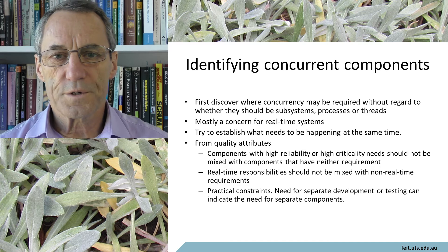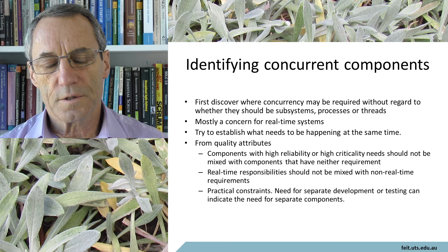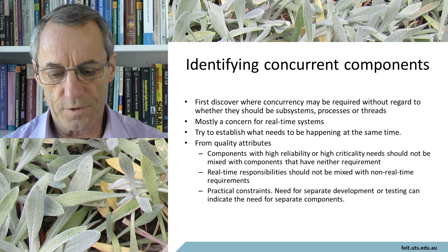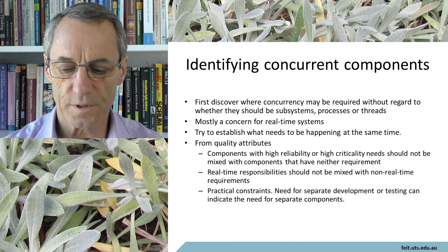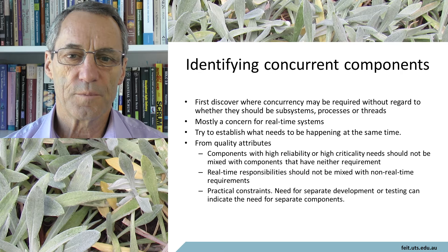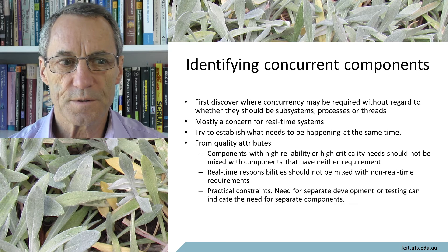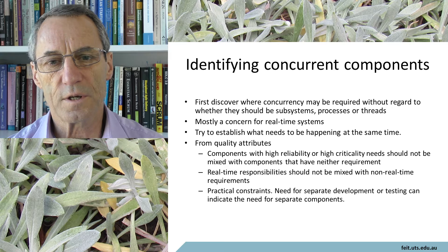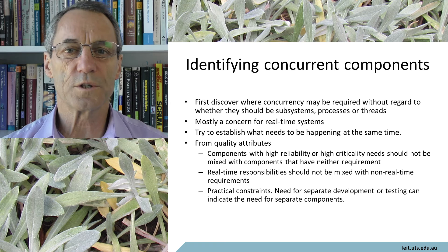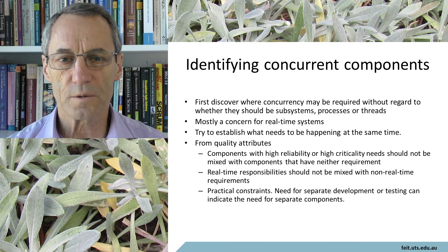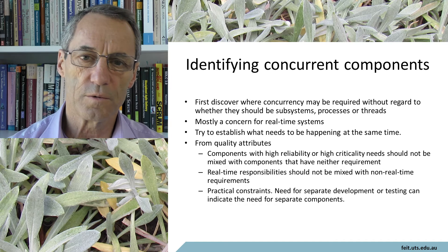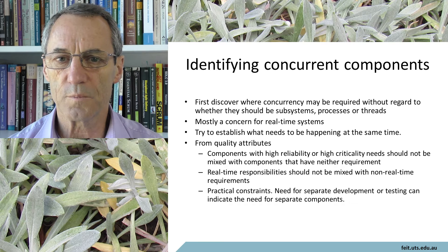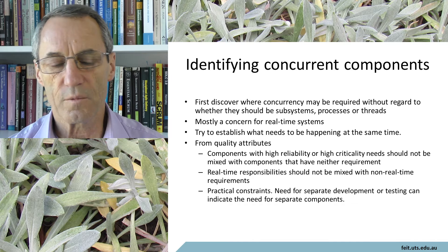I'd like to revisit the question of components in an execution architecture. Talking about components as if they already existed is not quite true. Part of the job of designing an execution architecture is to determine which objects can be aggregated into a component and which have to remain separate. We want to aggregate where it makes sense and not aggregate where it doesn't.